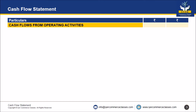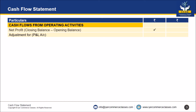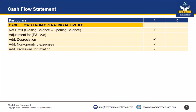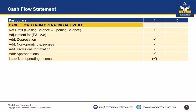The format will be: you start with cash flows from operating activities. There you start with net profit — closing balance minus opening balance. Then adjustment for profit and loss account items. You will add depreciation, add non-operating expenses, add provision for taxation, add appropriation, less non-operating income. You will get a total.